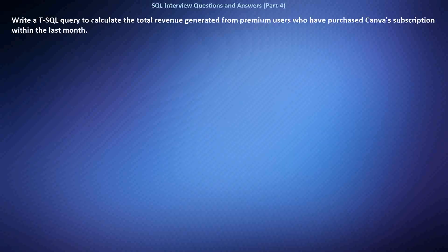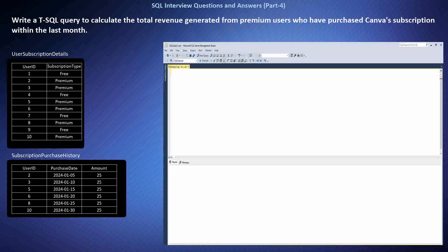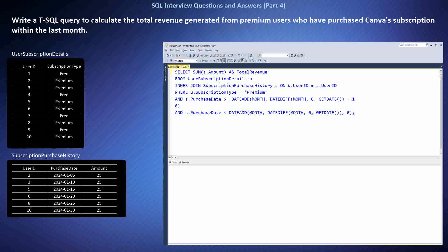Write a SQL query to calculate the total revenue generated from premium users who have purchased Canva's subscription within the last month. This requires querying two tables: one for user subscription details and another for subscription purchase history. The SQL query joins these tables on the user ID, filters for premium users who made purchases within the last month, and calculates total revenue by summing purchase amounts.